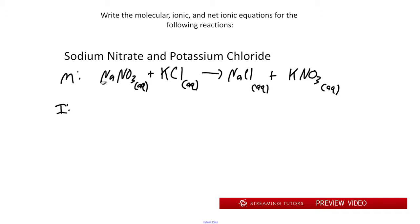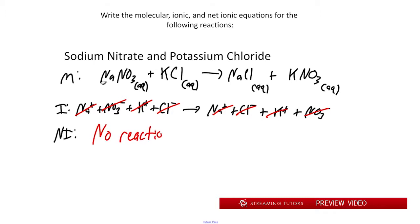Our ionic equation, we're going to split everything into ions because they're all soluble. That's Na+ plus NO3- plus K+ plus Cl- goes to Na+ plus Cl- plus K+ plus NO3-. For our net ionic equation, we're going to cancel out like species. If we cancel everything out, we see that everything cancels. So there's no net ionic equation. What happens here is that there's no reaction that occurs.